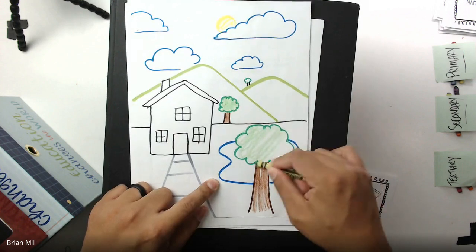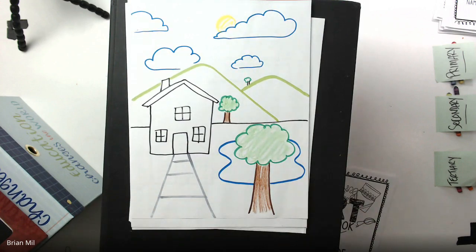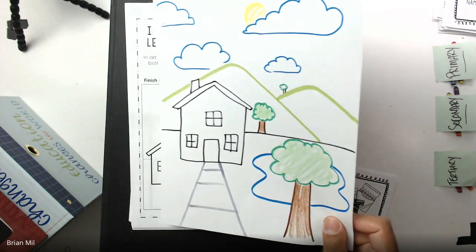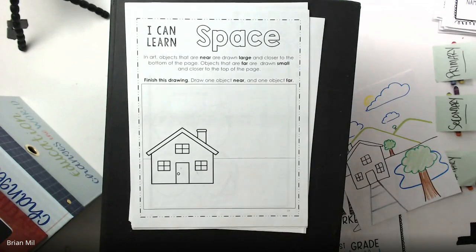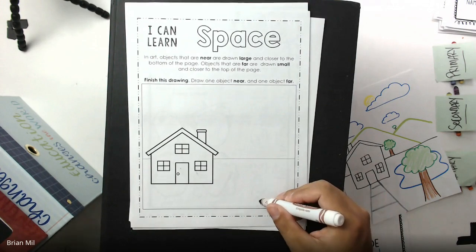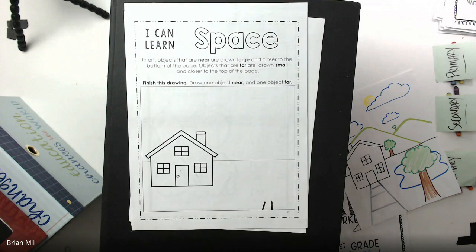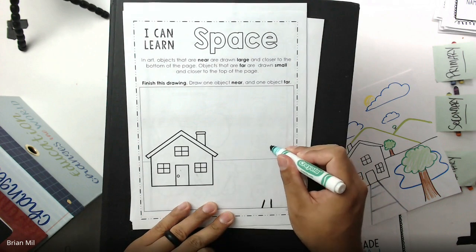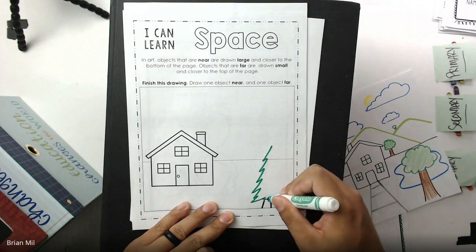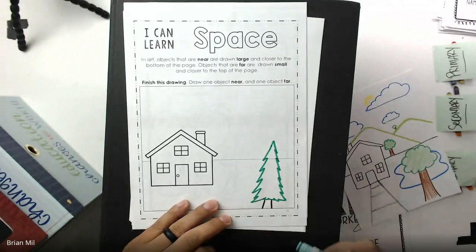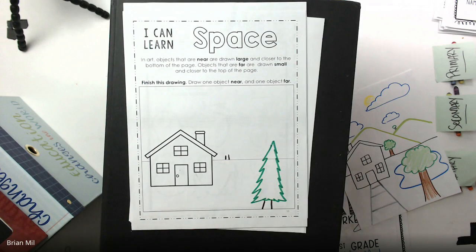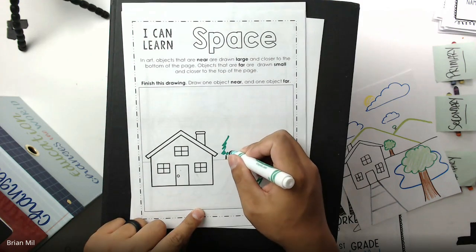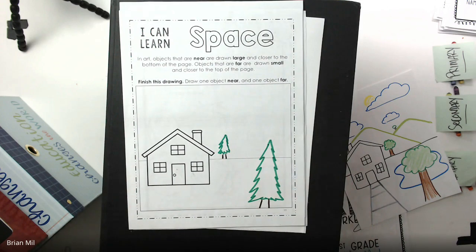All right, so what you're going to do, you don't have to draw trees if you don't want to, but I think I'm going to do it again. I think I might draw a different tree this time, but this is what I want you to do. It's asking us to draw one object near and one object far. I want you guys to follow those directions, so I'm going to draw one object near. So maybe I'll draw a tree again. So if you want to draw something else, you guys can. I'm going to draw a different type of tree this time. I'm going to draw a pine tree. And then I'm going to draw one object far. So I'm going to draw a smaller tree. There we are.